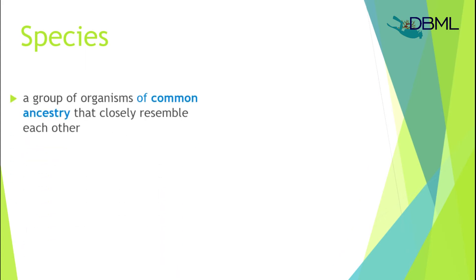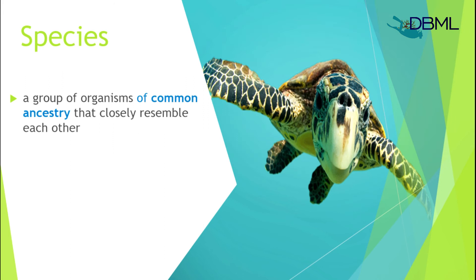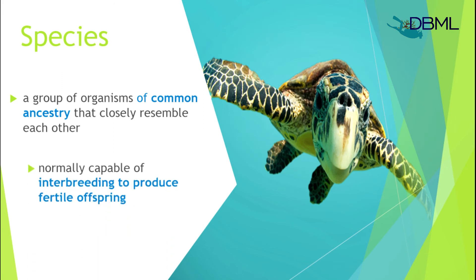Now, what exactly lives in a habitat? We have species — a group of organisms with common ancestry, determined by DNA sequencing. Scientists study the deoxyribonucleic acid of these animals to see that they have something similar that allows them to be classified as the same species. To be considered a species, organisms must be able to interbreed with each other to produce fertile offspring. For example, the loggerhead turtle cannot breed with a hawksbill turtle.